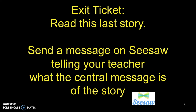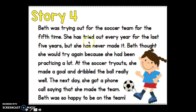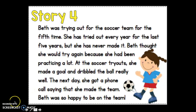Alright, it is your turn, my friends. Your exit ticket is to read the last story and then send a message on Seesaw telling your teacher what the central message is. Story four: Beth was trying out for the soccer team for the fifth time. She has tried out every year for the last five years, but she has never made it. Beth thought she would try again because she had been practicing a lot. At the soccer tryouts, she made a goal and dribbled the ball really well. The next day, she got a phone call saying that she made the team. Beth was so happy to be on the team. Make sure you think about the clues that could help you determine what Beth learned, and Seesaw your teacher what you think the central message is. Good luck!